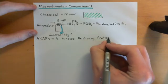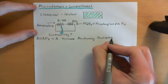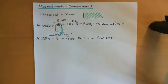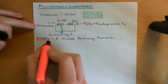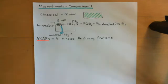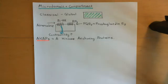Basically, AKAPs are proteins which are capable of binding to protein kinase A tetramers in the inactive state. There are a growing number of these in humans — the number now stands at over 50 AKAPs found in humans. Let me draw a very basic picture of the structure of an A-kinase anchoring protein.